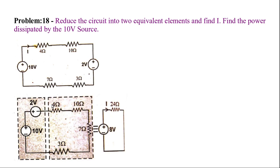Rearranging the resistors for easier understanding — the voltage source polarities must be carefully maintained when rearranging. The 10-volt source is connected positive, so keep that sign correct. All four resistors are in series, so simply add them: 4 + 10 = 14, 14 + 7 = 21, 21 + 3 = 24 ohms total equivalent resistance.